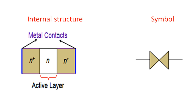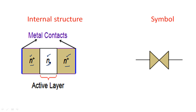Now let us see the construction of the Gunn diode. This is the internal structure: it is constructed by joining an n-plus region and another n-plus region with one n region in between. The n region is lightly doped and the n-plus region is heavily doped. To create this Gunn diode we use three different regions — two heavily doped n-plus regions with a lightly doped n-type material sandwiched in between.